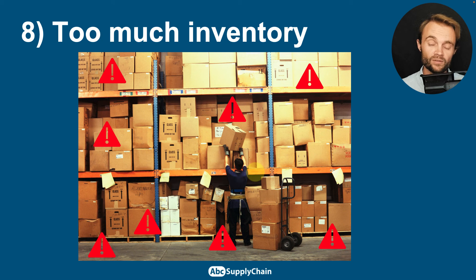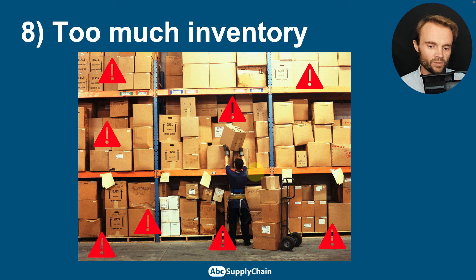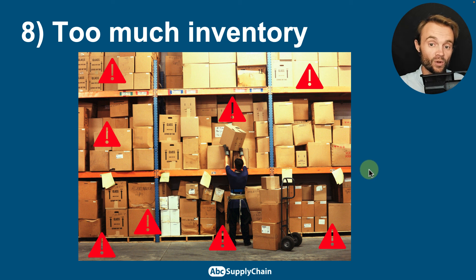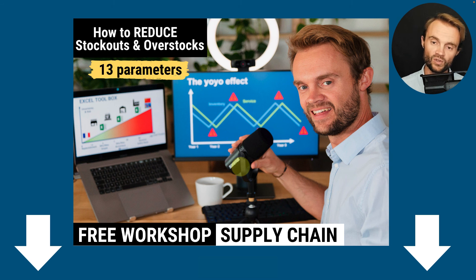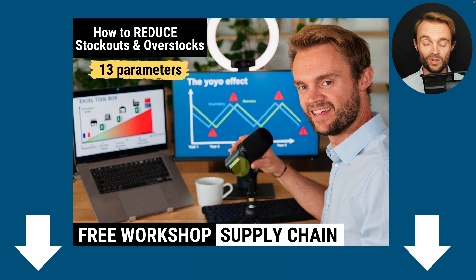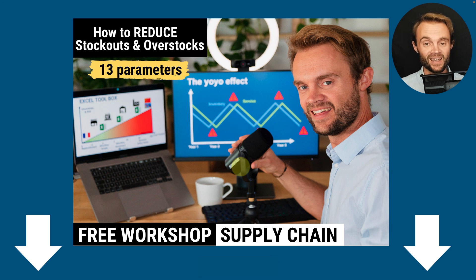Finally, the last reason for poor inventory accuracy is having too much inventory. If your warehouse or store is full of inventory, it's much harder to identify what is correct and what is incorrect. I really recommend keeping it simple and optimizing your inventory as much as possible — the cost to double-check everything will also be much lower. If you want to optimize your inventory, I have a free workshop where I'll teach you how to reduce stockouts and overstocks. All the links are below the video. Thank you so much for watching — let me know if you have questions, subscribe, and I'll see you very soon.